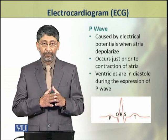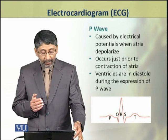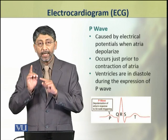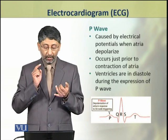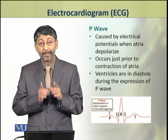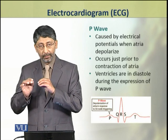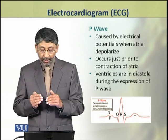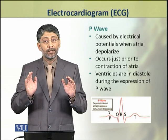The P wave is caused by the electrical potentials generated during atrial depolarization. It occurs just prior to the contraction of the atria. When the P wave appears, the ventricles are in diastole.